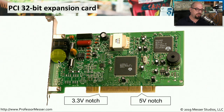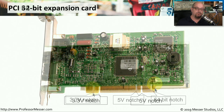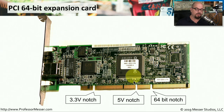If the notch is closest to the back of the computer, that specifies the device can support 3.3 volts of power. A card may also have a notch farther to the back, meaning it can support 5 volts from the PCI interface. A 64-bit card is a bit longer and still has notches for 3.3 volts and 5 volts, plus a third notch closer to the back that signifies it is a 64-bit interface card.